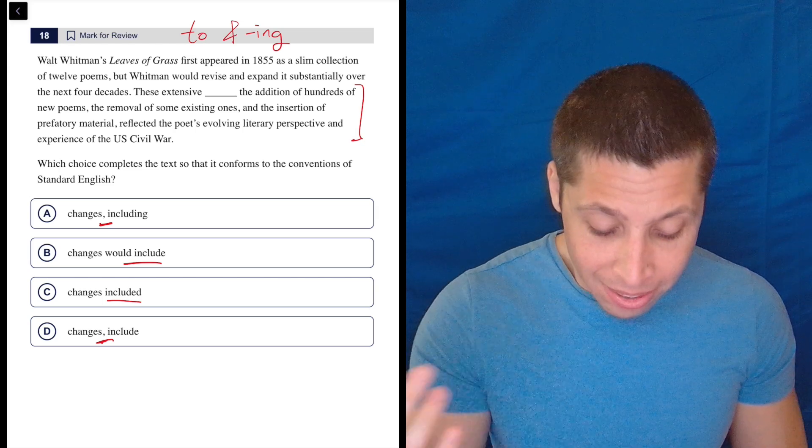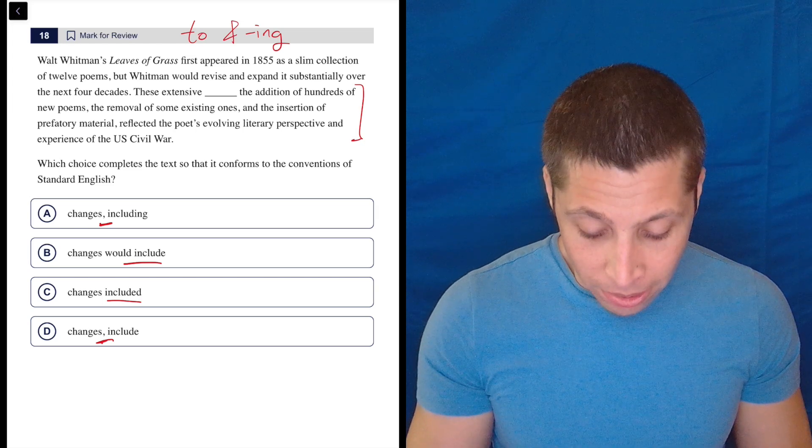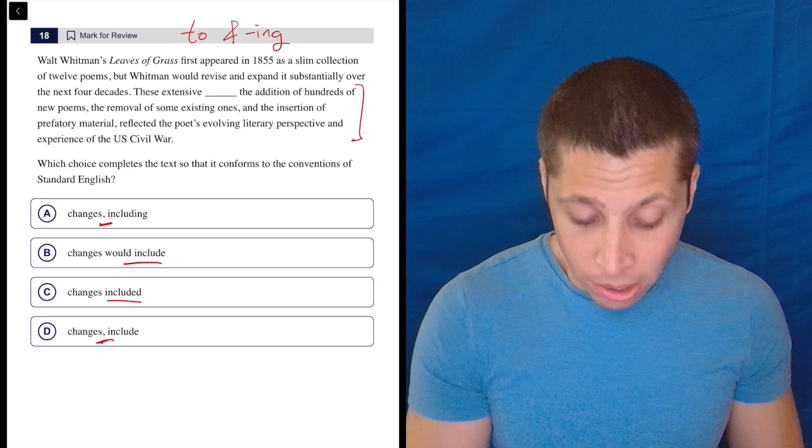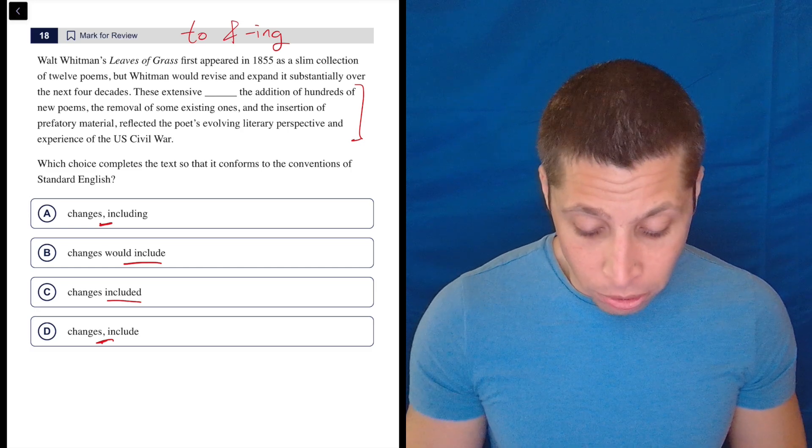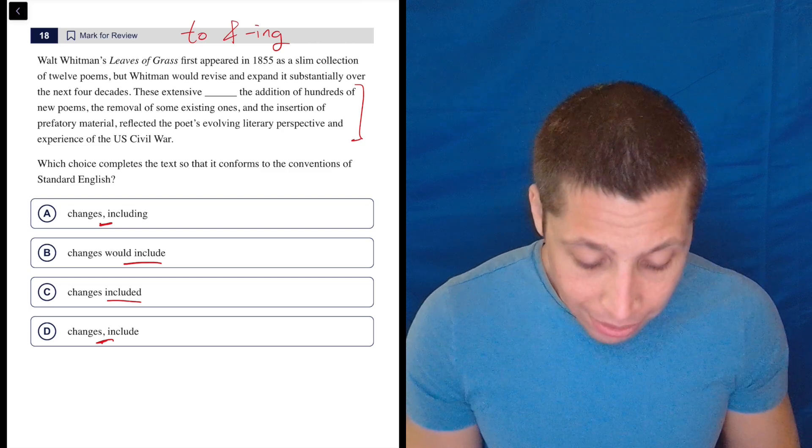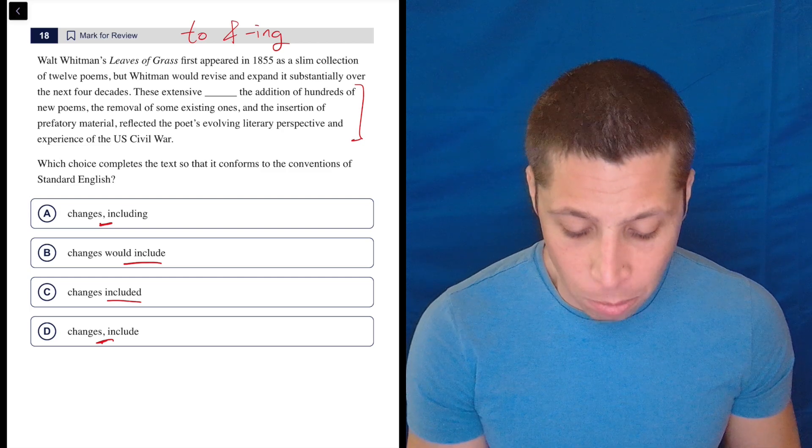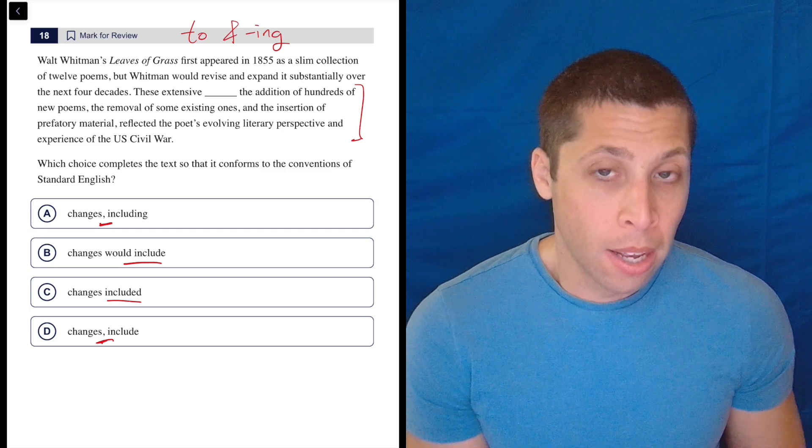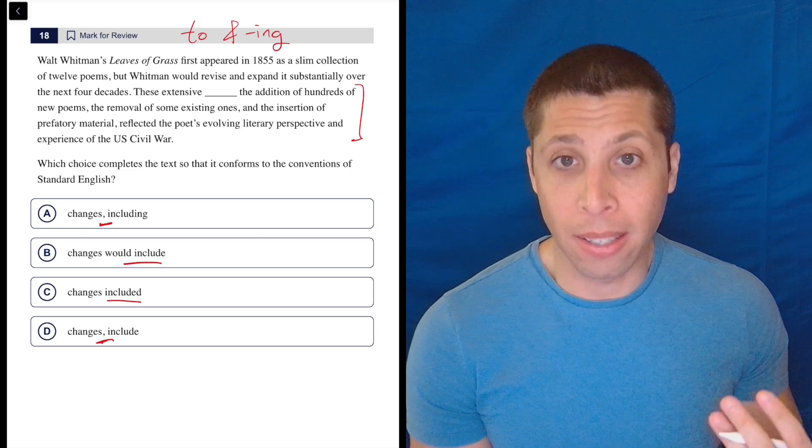So these extensive changes—let's just read A—these extensive changes, including the addition of hundreds of new poems, the removal of some existing ones, and the insertion of prefatory material, reflected the poet's evolving literary perspective and experience of the U.S. Civil War. So as I'm reading it, I'm looking: where is my sentence?